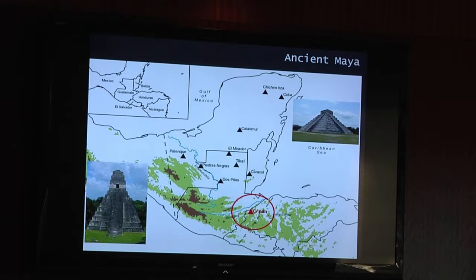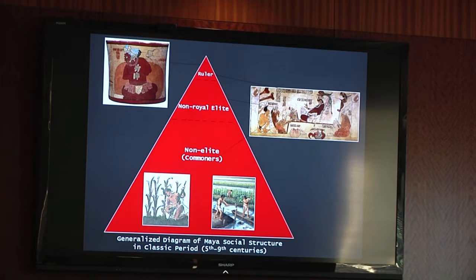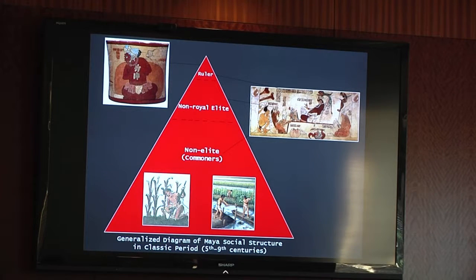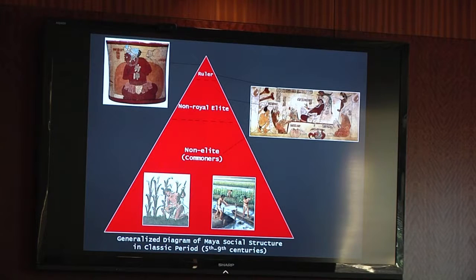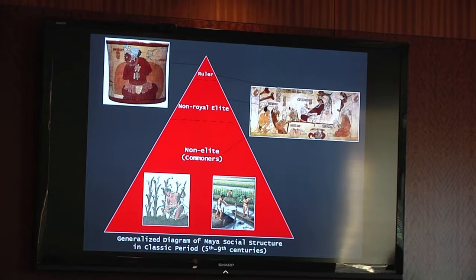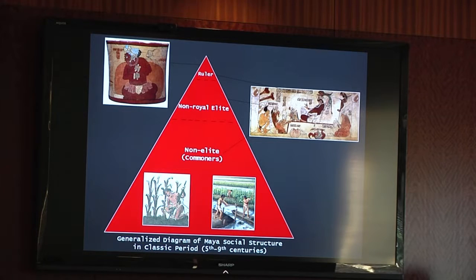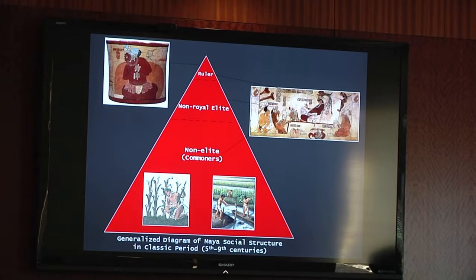I'm interested in trying to understand interaction on the landscape and through that, the social structure of the ancient Maya. From archaeological evidence — the distribution of luxury goods, elaborate versus non-elaborate architecture, access to various food sources, iconography and imagery — we know there was a royalty elite in the Classic period: rulers and kings, then lesser non-royal elites, and the majority of the population being non-elites, or commoners. I want to understand how people were living and experiencing things on a daily basis.